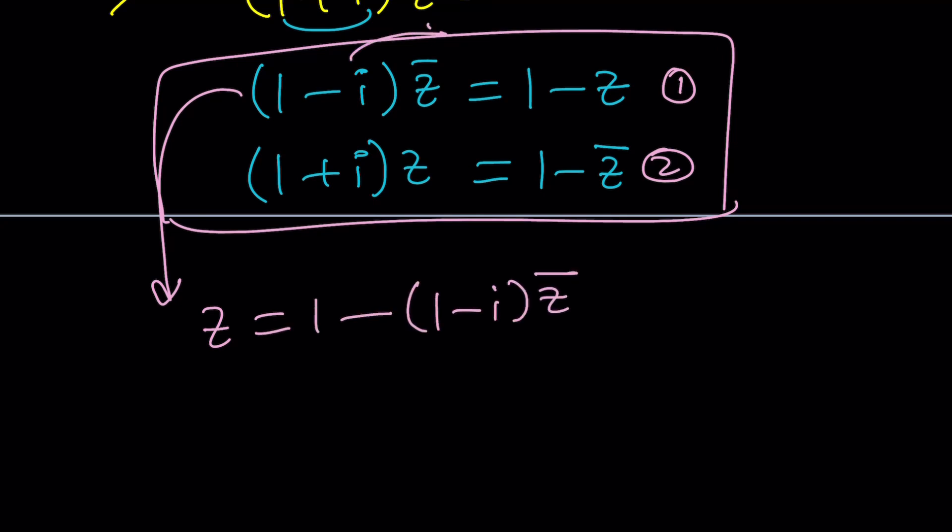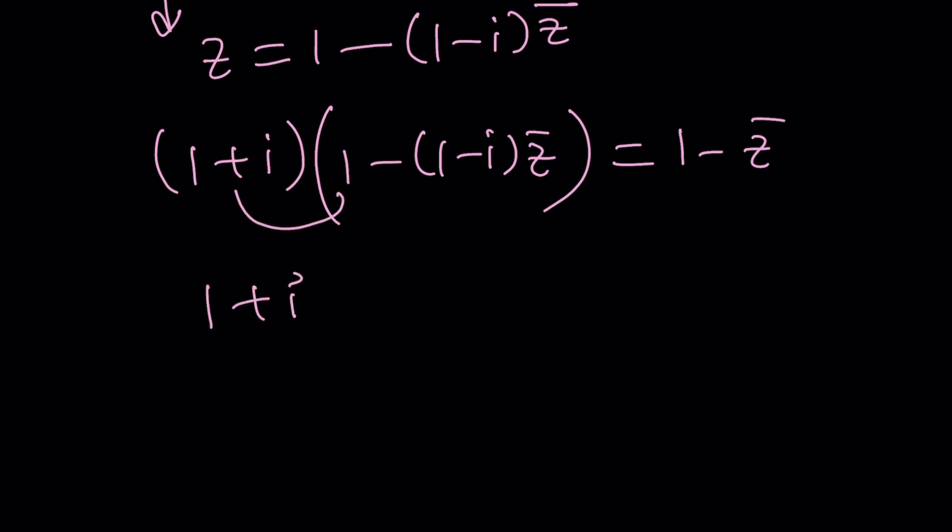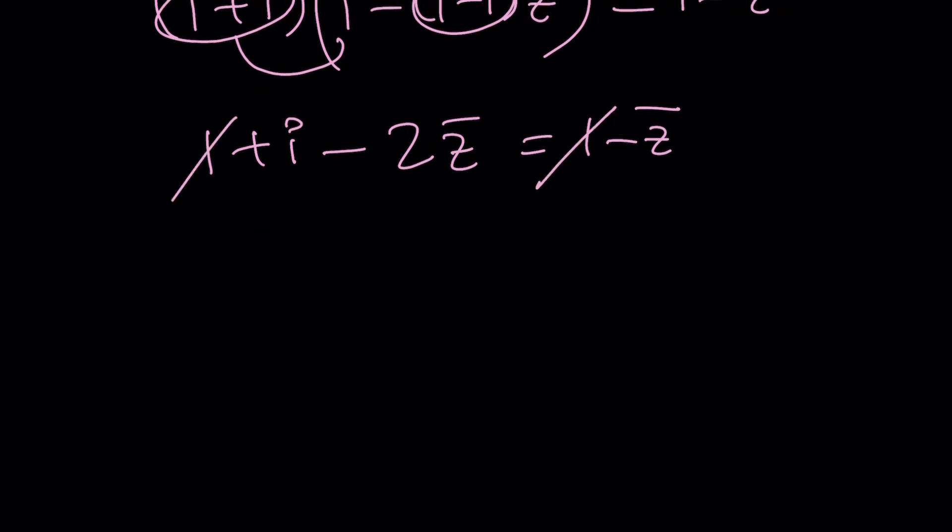Notice that this I put on the right hand side and I brought the Z over here. And then I'm going to go ahead and plug it in here. One plus I multiply by Z, which is one minus one minus I times Z bar. And then that is Z. And that is equal to one minus Z bar. I'm going to go ahead and distribute this one plus I times one minus. I'm going to go ahead and multiply these first. That's going to give me two from sum of two squares. Z bar, you see, it's pretty simple this way too.